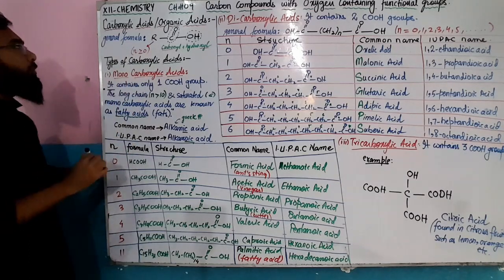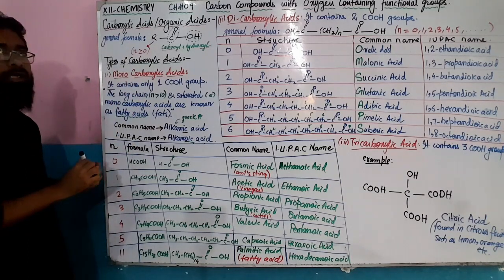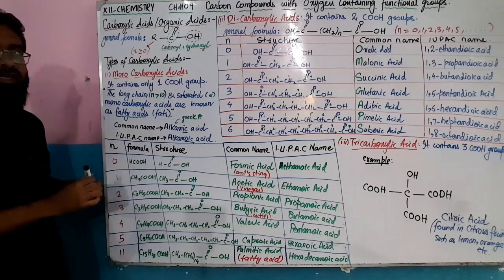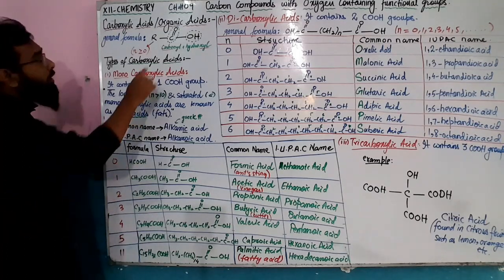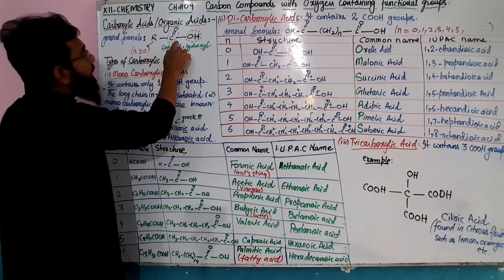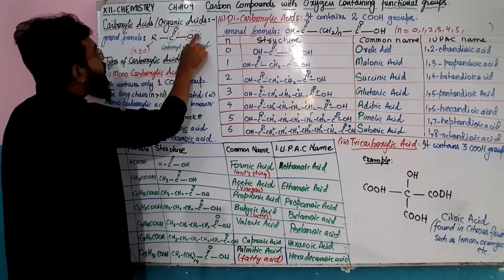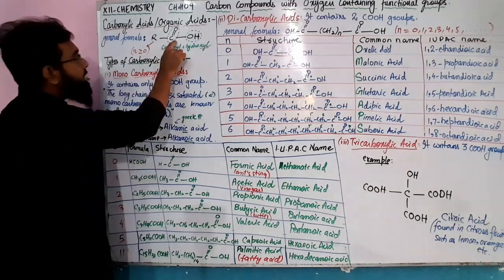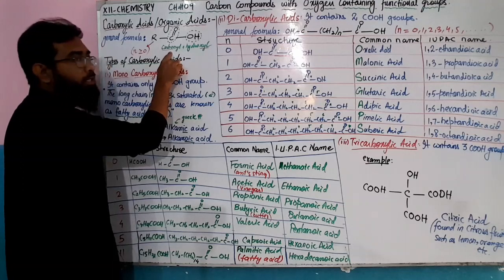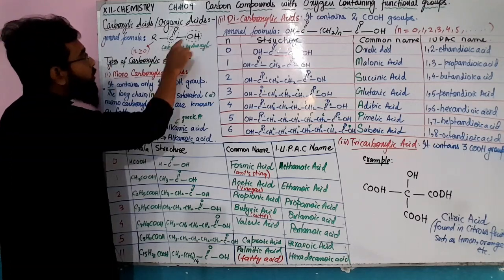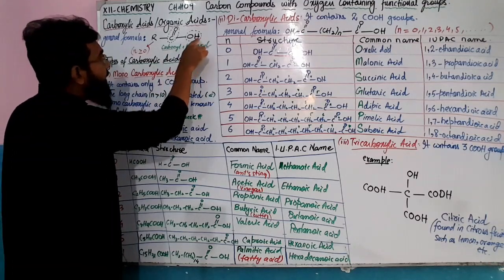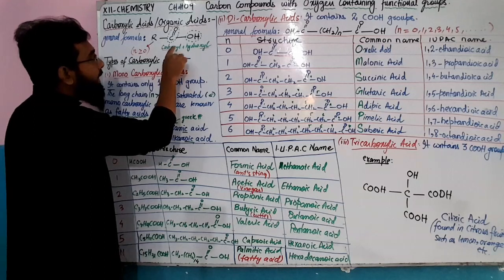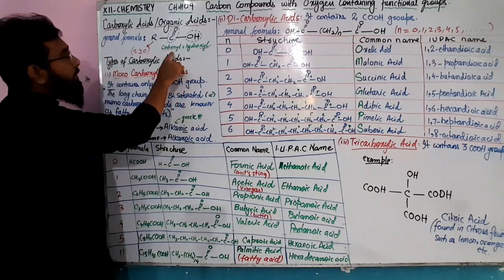We have discussed functional groups in chapter 6. The carboxyl group actually involves two groups: the carbonyl group, which is a C double bond O, and the hydroxyl group, which is the OH group. So the carboxyl group combines carbonyl and hydroxyl together.